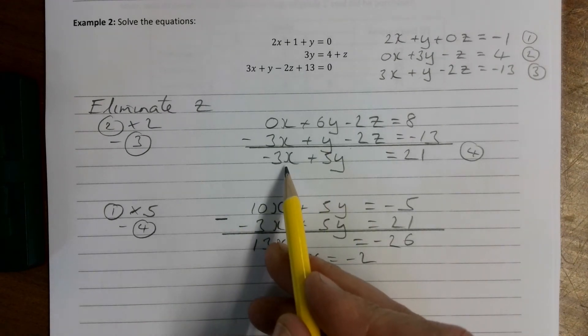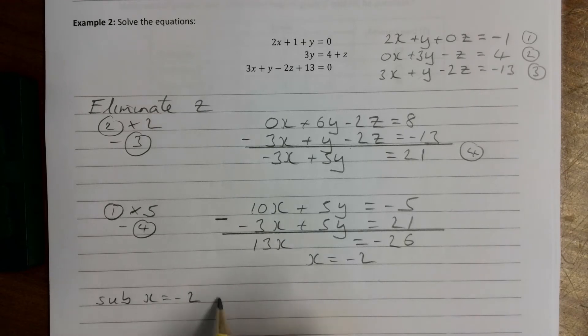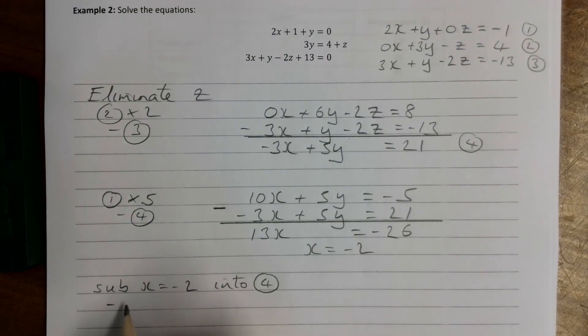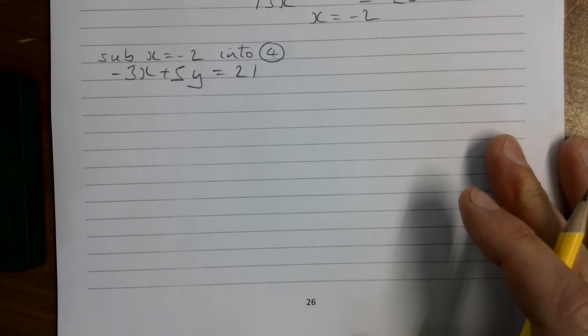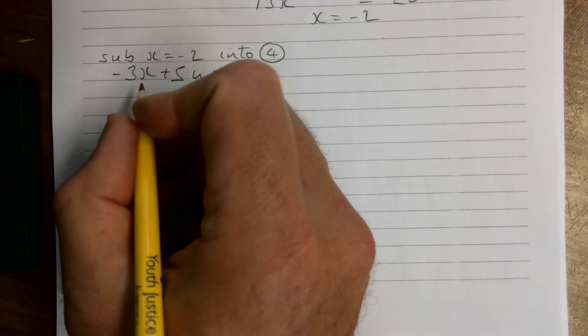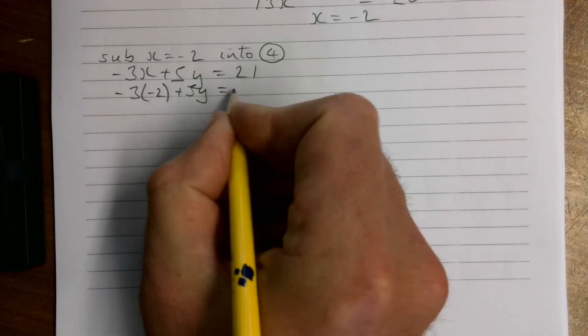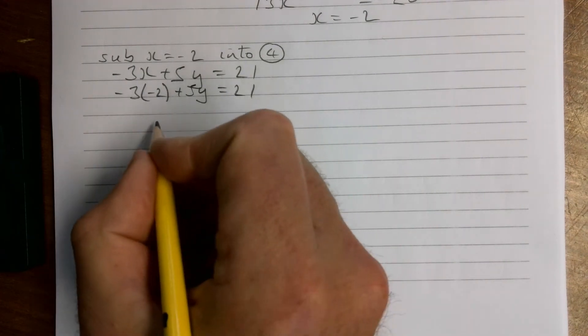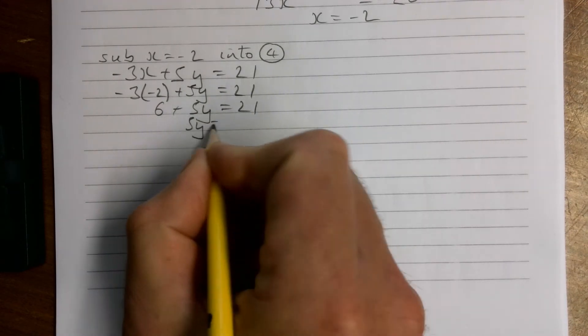x equals minus 2, and how are we going to get our other letters? If we know x we could substitute it into this one here and get our y. So let's do that, showing each line what we're doing. We're going to substitute x equals minus 2 into number 4. So equation 4 is minus 3x plus 5y equals 21, so that's minus 3 times minus 2 plus 5y is 21.